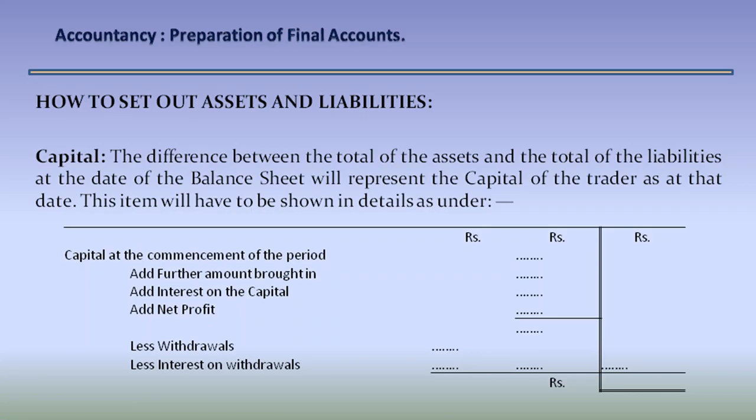Capital: the difference between the total of the assets and the total of the liabilities at the date of the balance sheet will represent the capital of the trader as at that date. This item will have to be shown in detail as: Capital at the commencement of the period, add further amount brought in, add interest on capital, add net profit, less withdrawals, less interest on withdrawals. The net amount should go to the outer column as the capital.